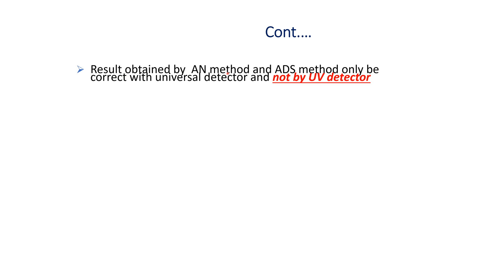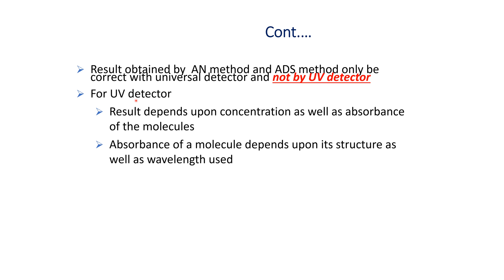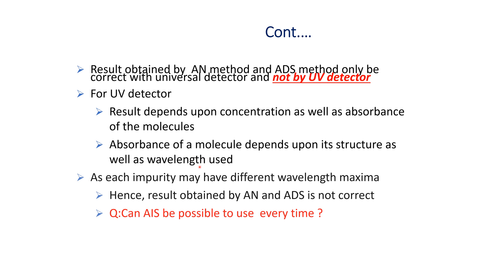Results obtained by the AN method and ADS method are only correct with universal detectors like ELSD and mass detectors, and not by UV detector. For a UV detector, the result depends upon the concentration as well as the absorbance of the molecule. Absorbance of a molecule depends upon its structure as well as the wavelength used. As each impurity may have a different wavelength maxima, results obtained by AN and ADS methods are not correct.